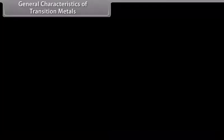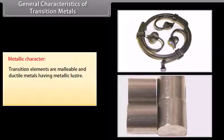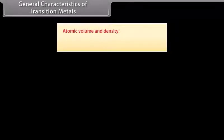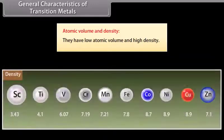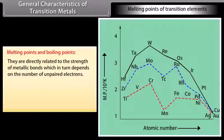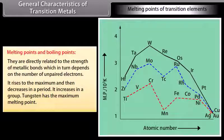Transition elements are malleable and ductile metals having metallic luster. They are good conductors of heat and electricity. Except mercury, all are solids. They have low atomic volume and high density. Their melting points and boiling points are directly related to the strength of metallic bonds, which in turn depends on the number of unpaired electrons. Melting points rise to a maximum and then decrease in a period, and increase in a group. Tungsten has the maximum melting point, as partially filled D-orbitals form additional covalent bonding due to D-overlapping of adjacent atoms.